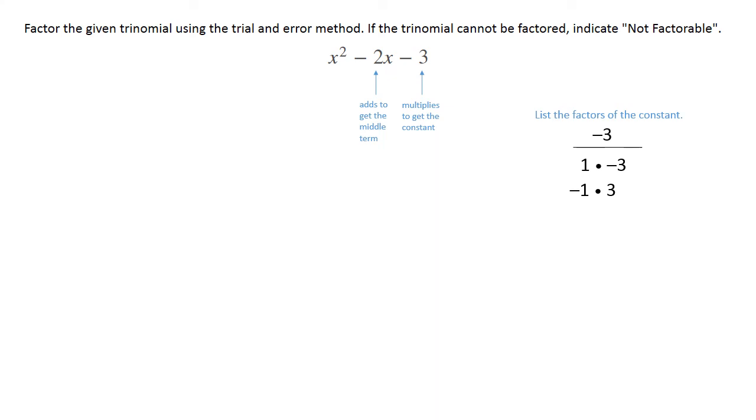And in this case, the 1 and the negative 3 are gonna add together to give you the negative 2 that you need. So write your expression out, open your double bubble, break your x apart, and add those two factors that you found inside the bubbles. So your final answer on this one is x plus 1, x minus 3.